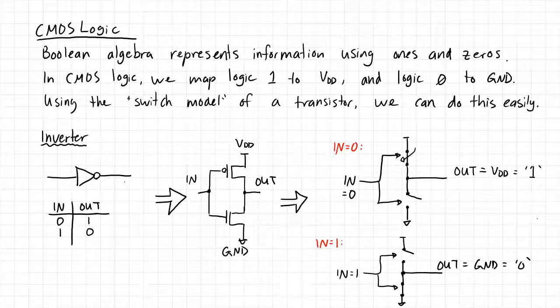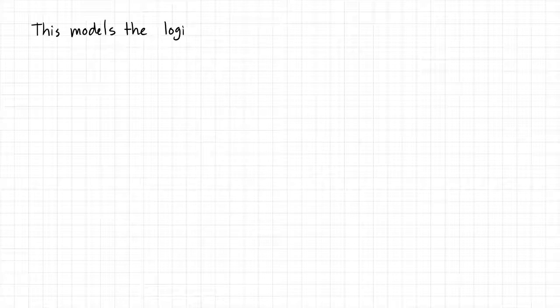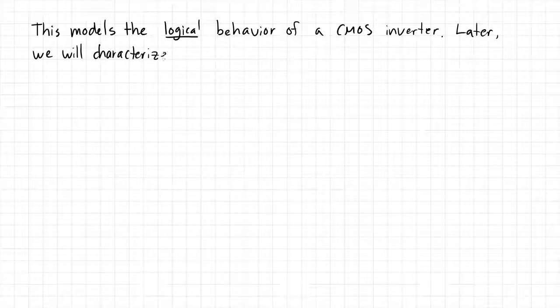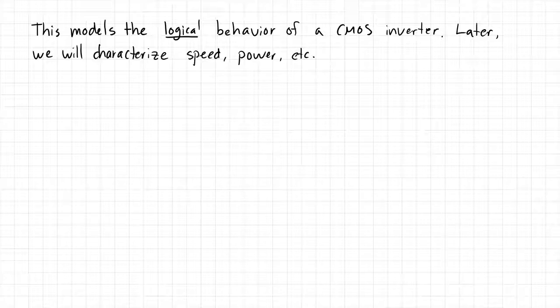What we just drew models the logical behavior of a CMOS inverter. Later we will characterize its speed, power consumption, etc. — that's going to be really important for the rest of the class. We want to build digital circuits, but we want to build them to be good, offering the most performance or whatever we're most interested in optimizing.